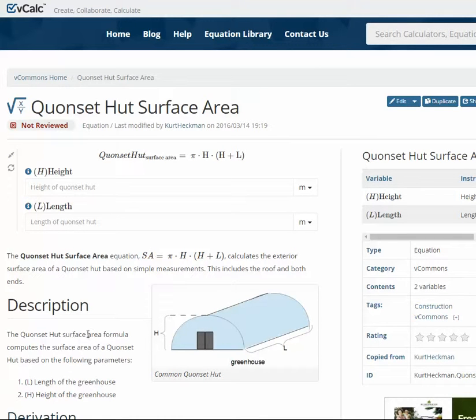Quonset huts are used in construction where you'll need to know the surface area for materials, but they're also used in applications such as greenhouses and high tunnels where you'll need to know the surface area to calculate factors associated with heat loss.